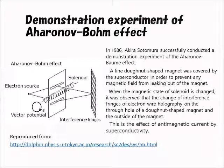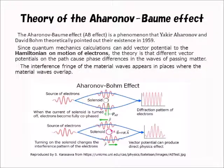This is the effect of the antimagnetic current due to superconductivity. The Aharonov-Bohm effect (A-B effect) is a phenomenon that Yakir Aharonov and David Bohm theoretically pointed out in 1959. Since quantum mechanics calculations can add vector potential to the Hamiltonian on the motion of electrons, the theory holds that different vector potentials along the path cause phase differences in the waves of passing matter.